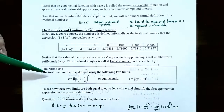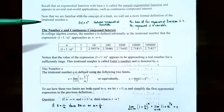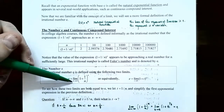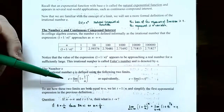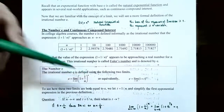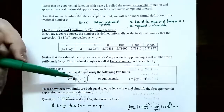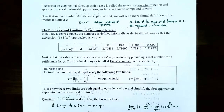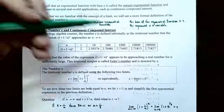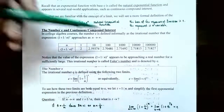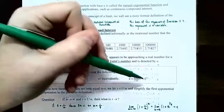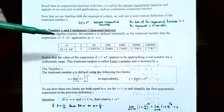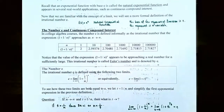Here is the formal definition of the number e. The irrational number e is defined using two equivalent limits. First, e equals the limit as n approaches infinity of (1 + 1/n)^n, where n appears in the denominator and in the exponent. Equivalently, e equals the limit as t approaches 0 of (1 + t)^(1/t), where t is the variable approaching 0, appearing inside the parentheses and in the exponent. As t gets really close to 0, this exponential expression also approaches the number e.